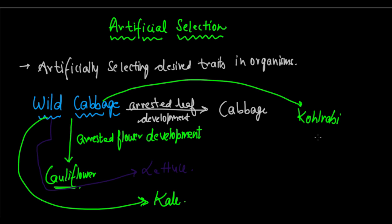So now we have kohlrabi, we have cabbage, we have cauliflower, we have lettuce, and we have kale, all from that same common origin, that is wild cabbage. So artificial selection, again, a very prominent thing in the agricultural sector. Clear example is wild cabbage.